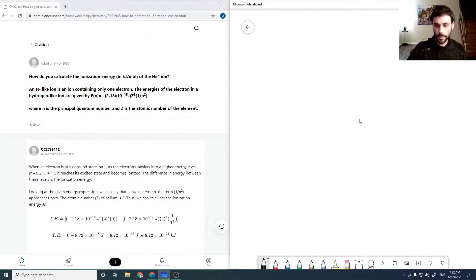How do you calculate the ionization energy in kilojoules per mole of the helium-plus ion? It gives us that an H-like ion follows a hydrogen-like energy level structure.